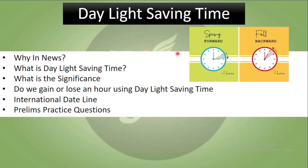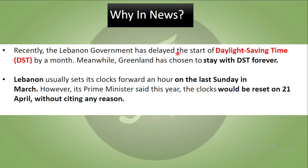Then we will see the International Date Line, and we will come to our today's prelims practice questions. Via news, recently the Lebanon government has delayed the start of Daylight Saving Time by one month. Meanwhile, Greenland has chosen to stay with DST. Lebanon usually sets its clocks forward an hour on the last Sunday in March, however the prime minister said that this year it would be on 21st April, without citing any reason.